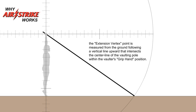the extension vertex point is measured from the ground following a vertical line upward that intersects the center line of the vaulting pole within the vaulter's grip hand position.